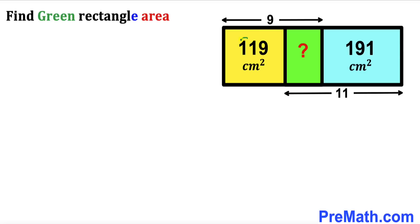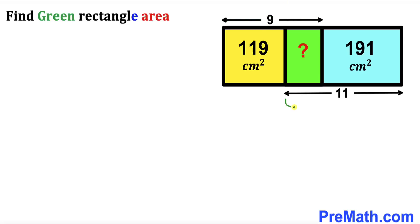The area of the yellow rectangle is 119 centimeter square. The area of the blue rectangle is 191 centimeter square. The yellow and green rectangle lengths combined is 9 centimeters, while the green and blue rectangle length combined is 11 centimeters. Our task is to calculate the area of the green rectangle.